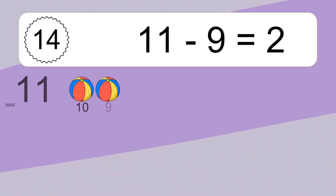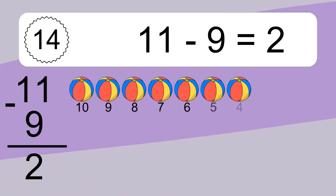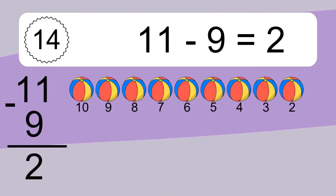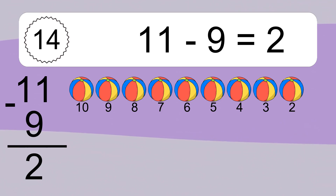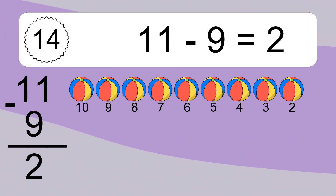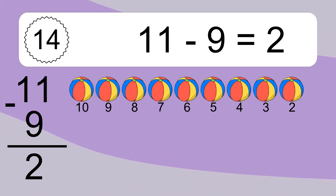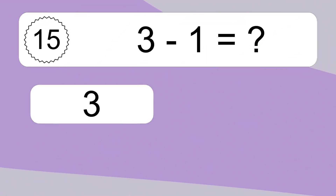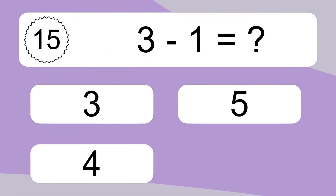11 minus 9 equals what? 11 minus 9 equals 2. Let's count it. 10, 9, 8, 7, 6, 5, 4, 3, 2. 3 minus 1 equals what?